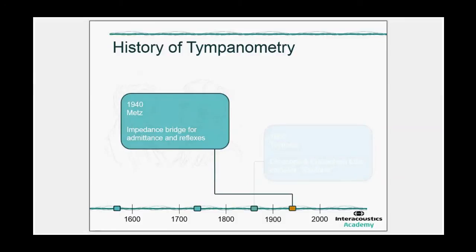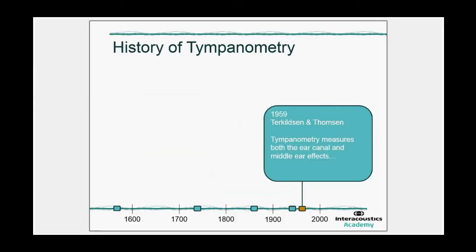The first tympanometer was built in 1940 by Metz. It was an impedance bridge which could measure reflexes and the compliance of the middle ear. He did not use pressure yet. It took a few years until around 1959, 1960, when they found out that adding a pressure sweep is beneficial, because by moving completely up to the positive pressure, you get ear canal properties only. And then you can separate ear canal properties from the middle ear properties that we are interested in.